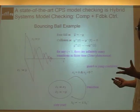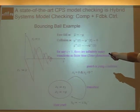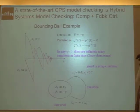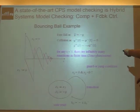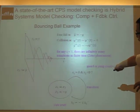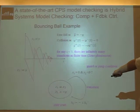I'll use a simple example to demonstrate what hybrid system model checking is. This example is a bouncing ball example. When you drop a ball, at the very beginning, this ball is totally governed by Newtonian law, which can be described by a differential equation set. We can use a node with this differential equation set that describes the Newtonian law of the free falling of this ball.